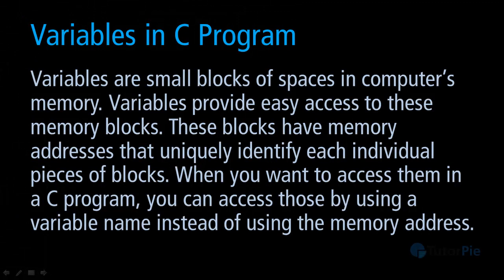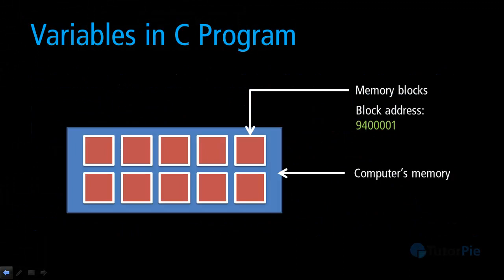Now let's try to understand this graphically. In this simple diagram I'm trying to explain the main and basic concept about variables and how variables are used in a C program. This blue area is the computer's memory and the small squares are the memory blocks that can be used to store data. In the computer's memory you can see these memory blocks have memory addresses — for example, this particular memory block has the memory address 9400001.